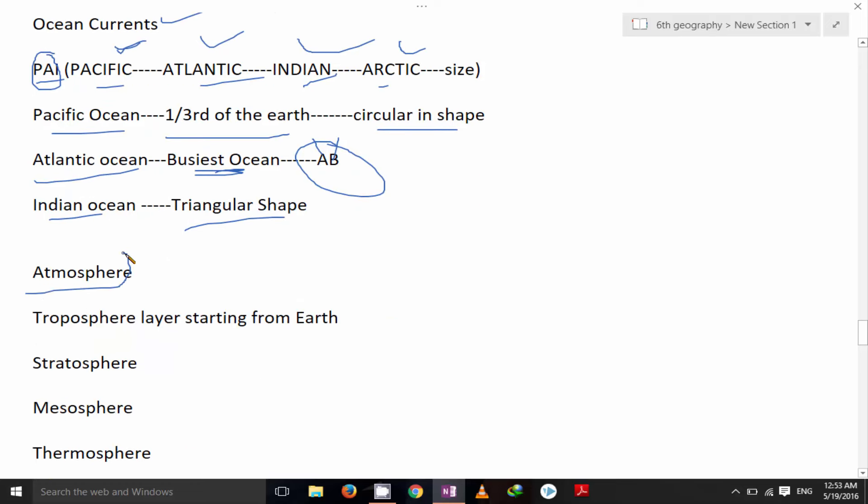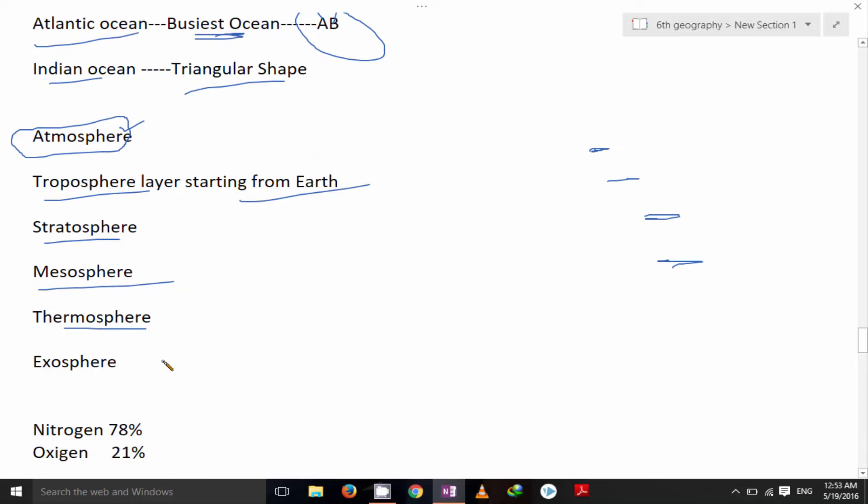Atmosphere. Atmosphere is made up of some layers. First layer from down is troposphere, starting from the earth. Then stratosphere, then mesosphere, thermosphere, and exosphere. So by this way our atmosphere made up of some layers.